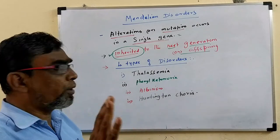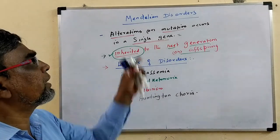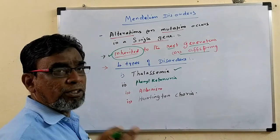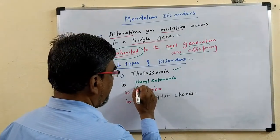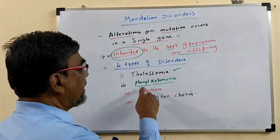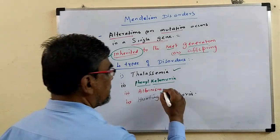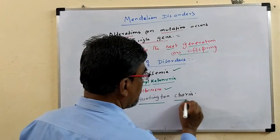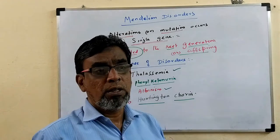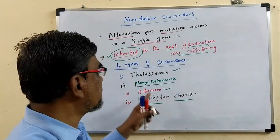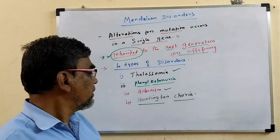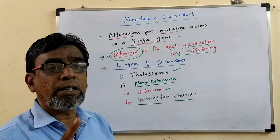Here we are going to discuss about four important disorders which occur due to Mendelian Disorders. The first is called Thalassemia. The next one is Phenylketonuria. The third one is called Albinism. The fourth one is Huntington's Chorea. These are the four important Mendelian Disorders. In this video we are going to discuss these four topics.